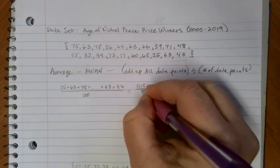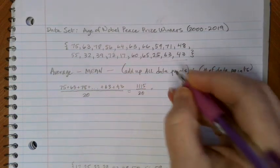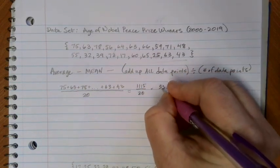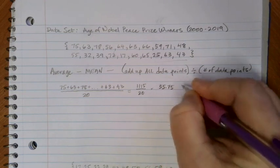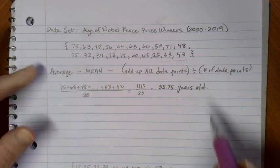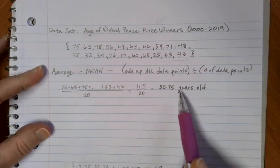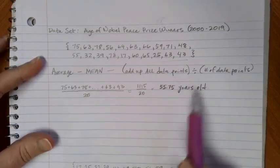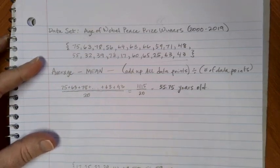And when I divided by 20, what I ended up with was 55.75. So the average age, the mean age of someone that won the Nobel Peace Prize this century was 55.75 years old.